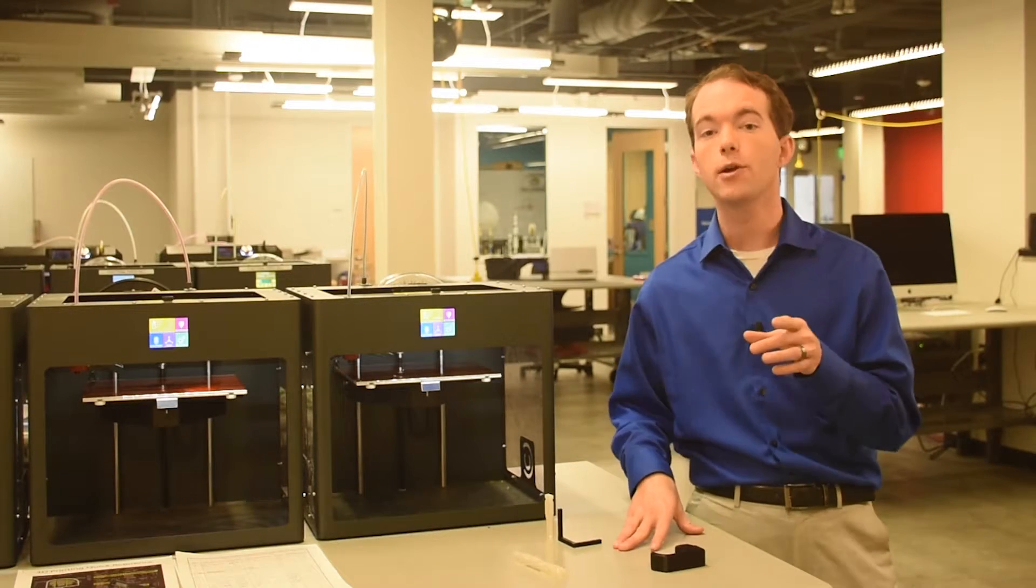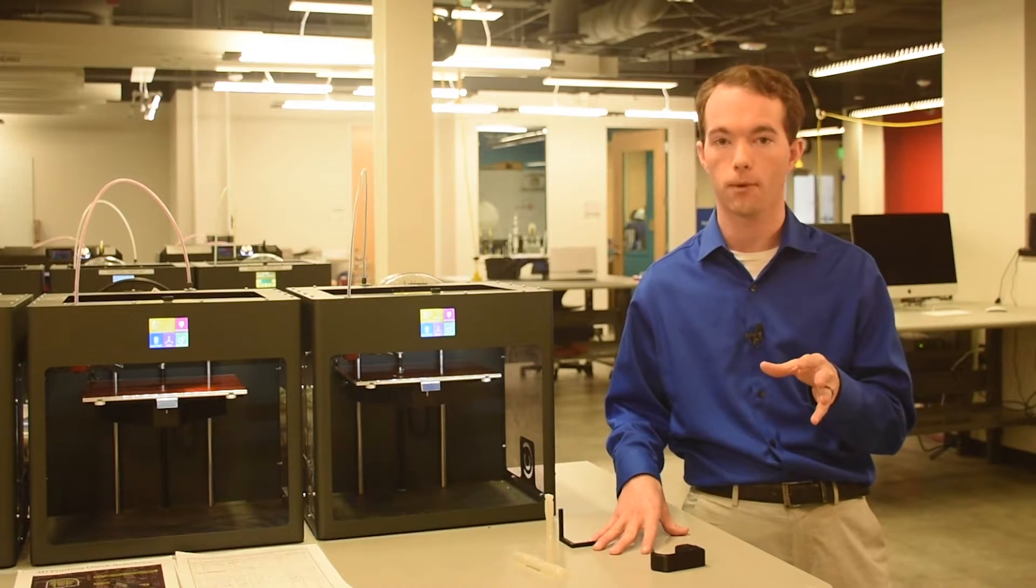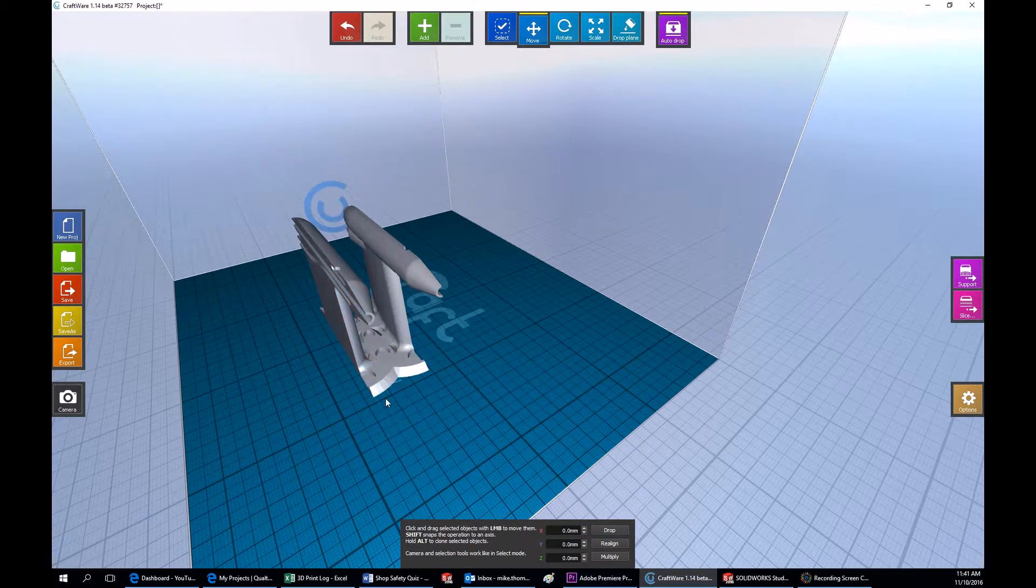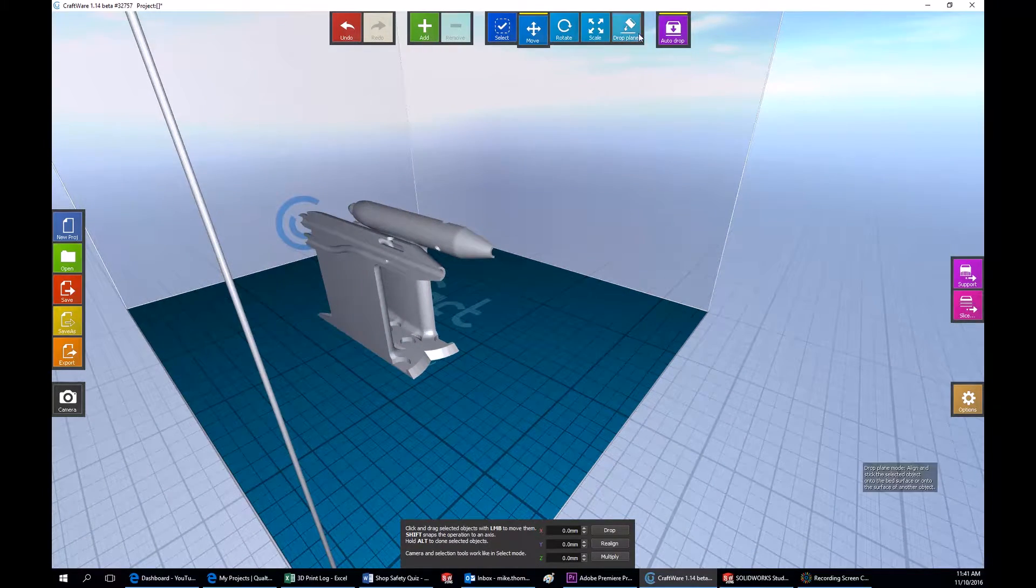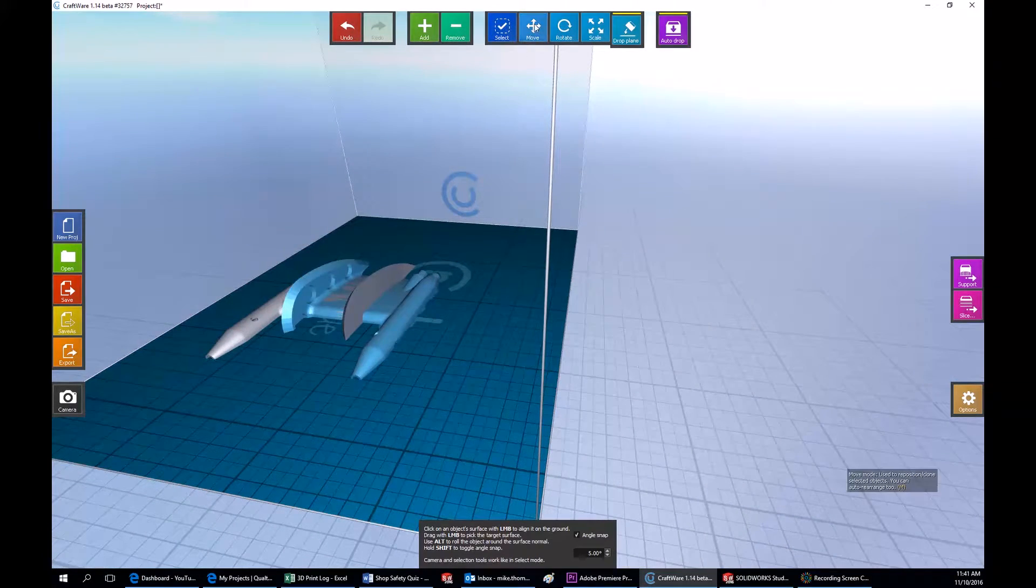So here's a secret that I recommend to you whenever you're dealing with the structure and support problem. Split the model along an axis. This pitot tube is bilaterally symmetric, so I split the model in half and then laid each half flat.